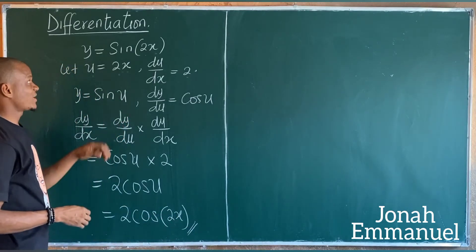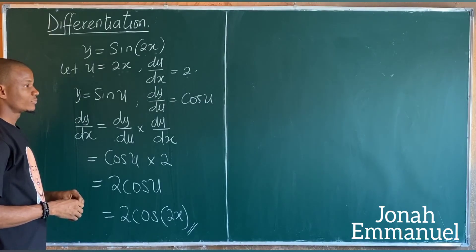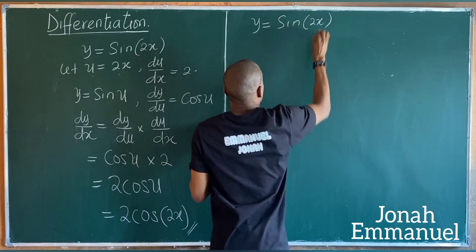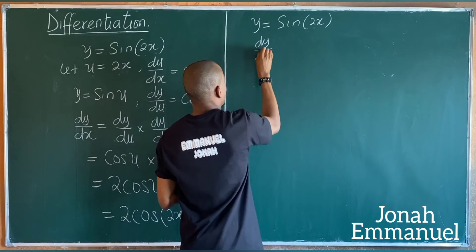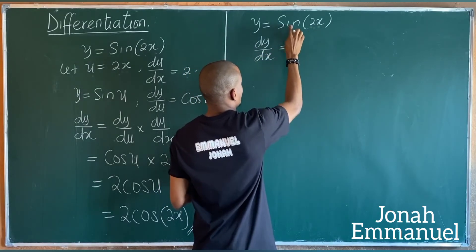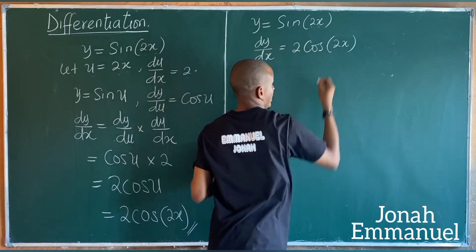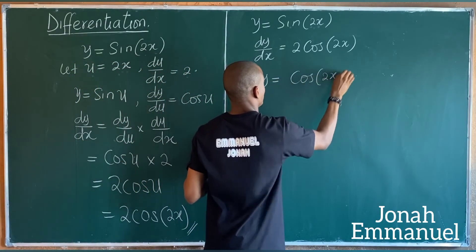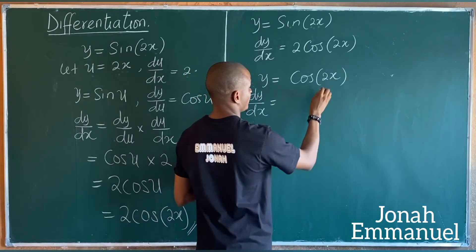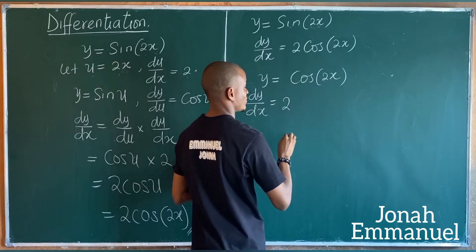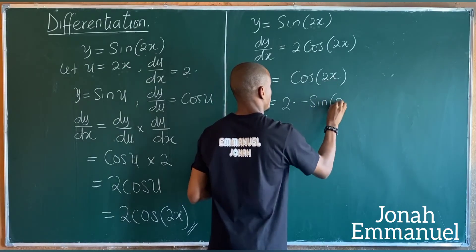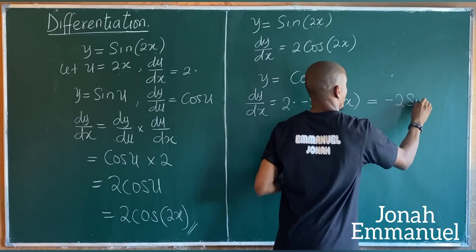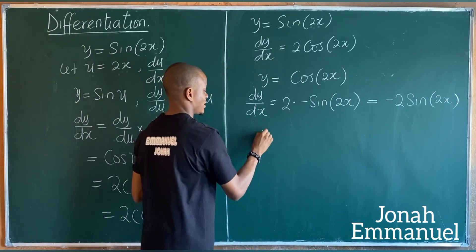The shortcut is: differentiate the inner function 2x to get 2, differentiate sine to get cos, and repeat the argument 2x. This gives dy/dx equals 2 cos 2x. Similarly, if y equals cos 2x, dy/dx equals negative 2 sin 2x.